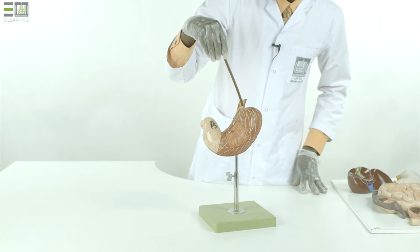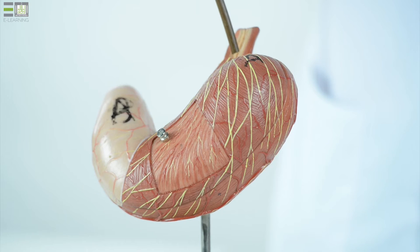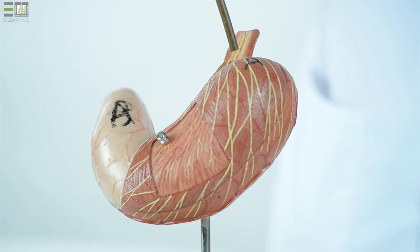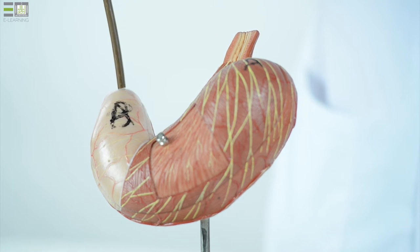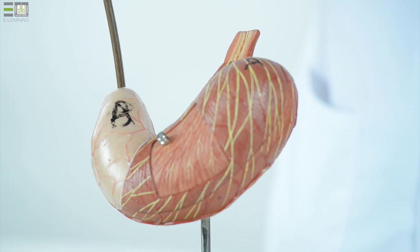The upper end of the stomach is characterized by its junction with the esophagus as gastro-esophageal junction, and the lower end connects with the duodenum at gastro-duodenal junction.